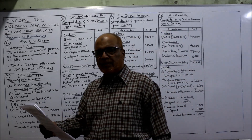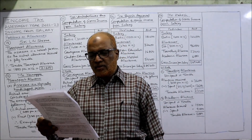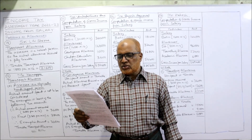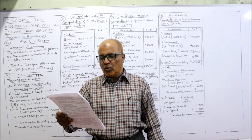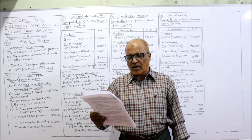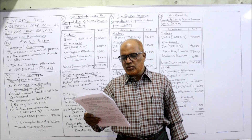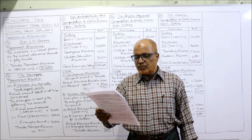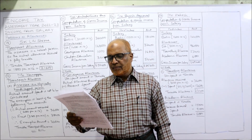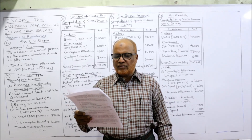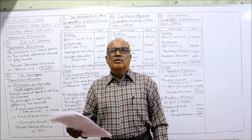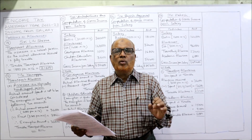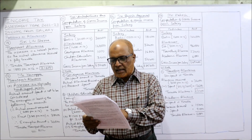Now, 13th problem: Sri S. Alan Sharma is working in a limited company in Guntur. His salary particulars per month are: basic 12,000, DA 3,000, CCA 2,000, and transport allowance 1,800. Calculate the taxable amount of transport allowance only — it is asking how much the taxable portion of transport allowance is.